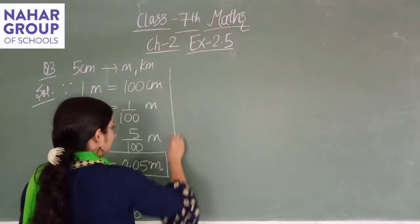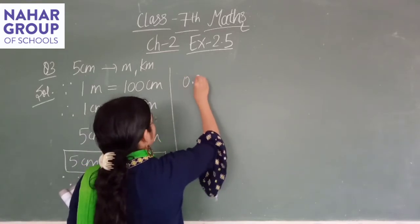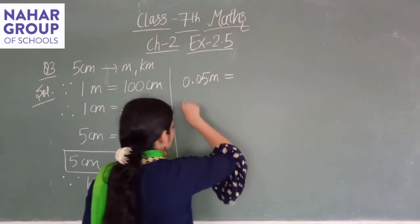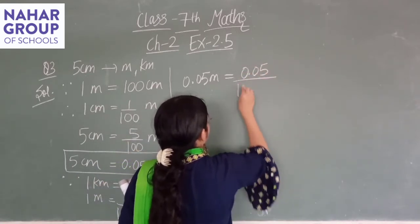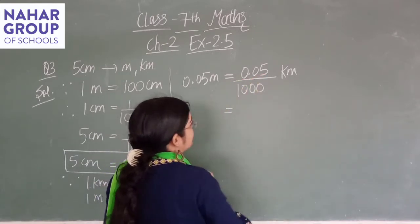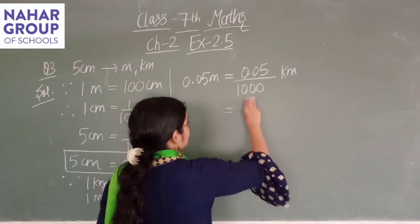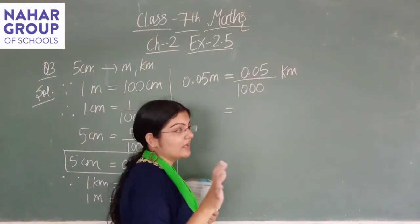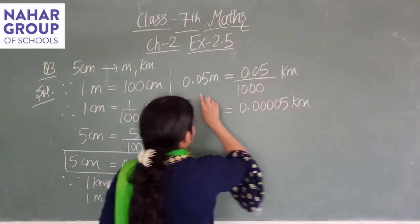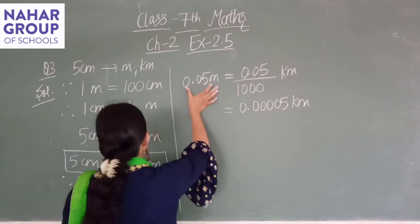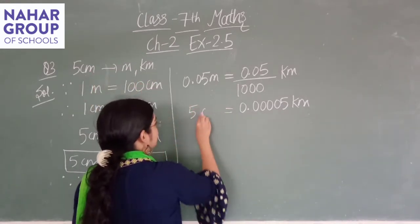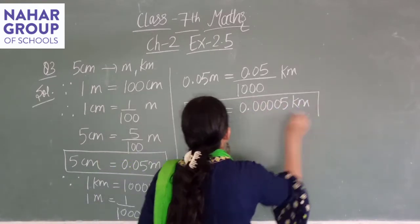तो क्या करेंगे? 0.05 meter is equals to 0.05 divided by 1000 kilometer। यह जो 0.05 है — नीचे 3 zeros और हैं, मतलब point के बाद 2 digits already हैं और 3 और चाहिए, so it means 0.00005 kilometer। 0.05 meter जो 5 centimeter के बराबर था, so 5 centimeter to kilometer equals to 0.00005 km।